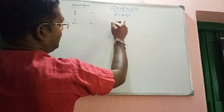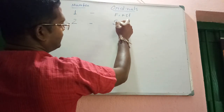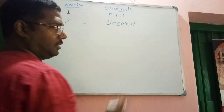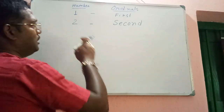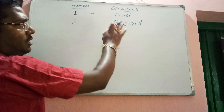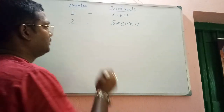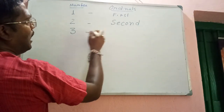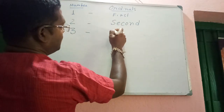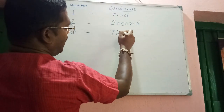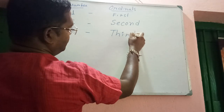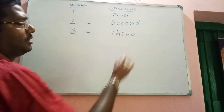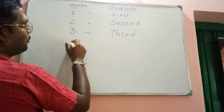Next, number is two and ordinal will be second — S-E-C-O-N-D. Okay, number is two and ordinal will be second. Next, number is three and ordinal will be third — T-H-I-R-D.